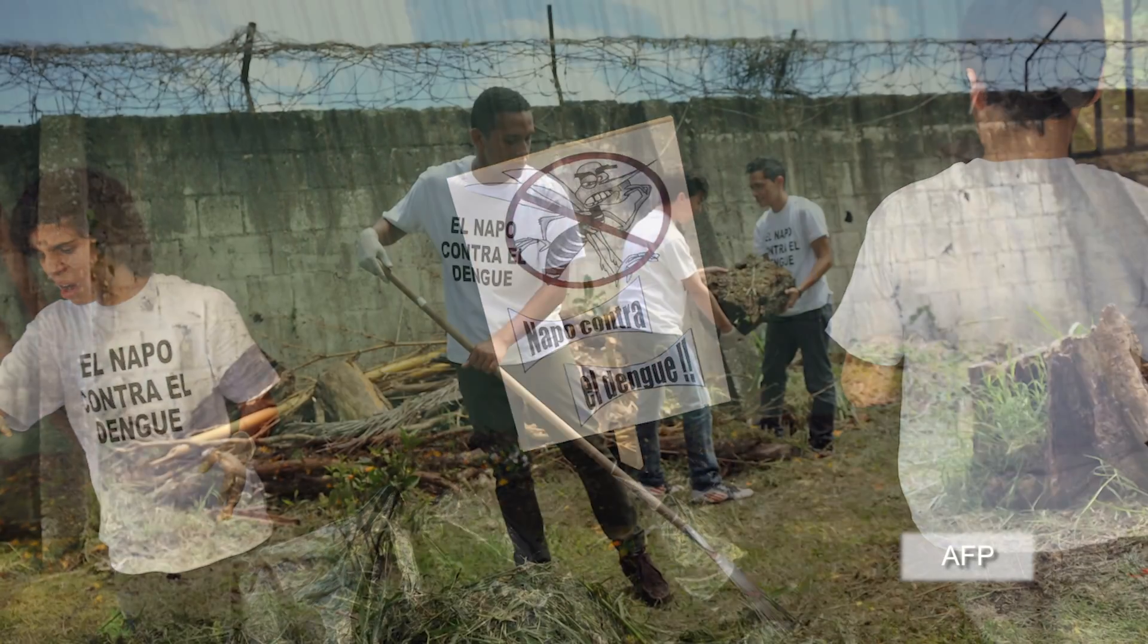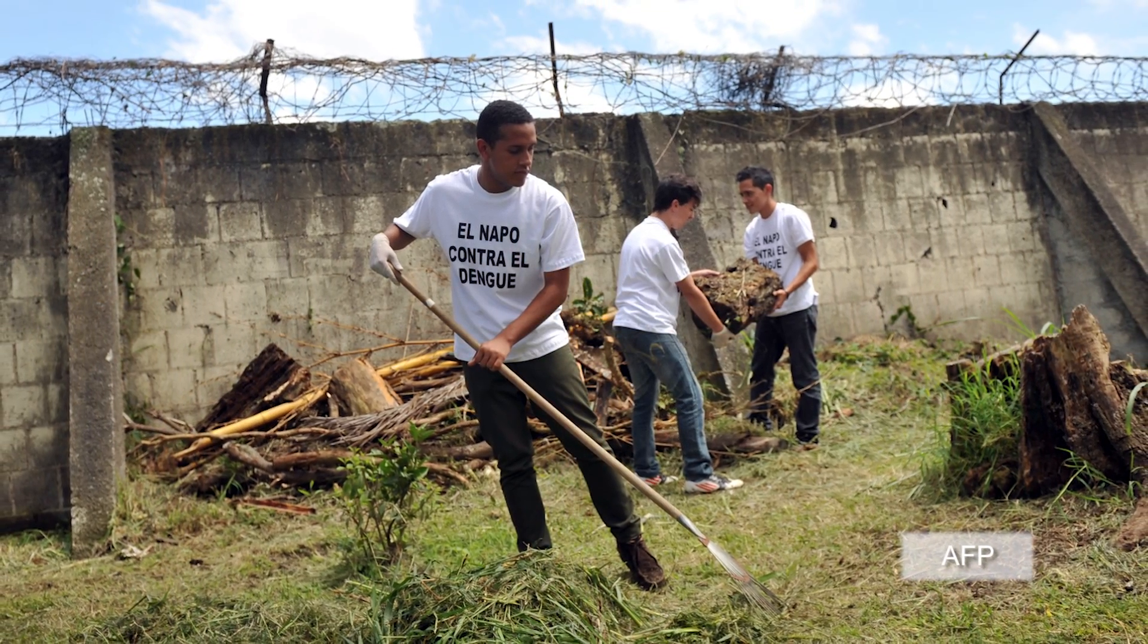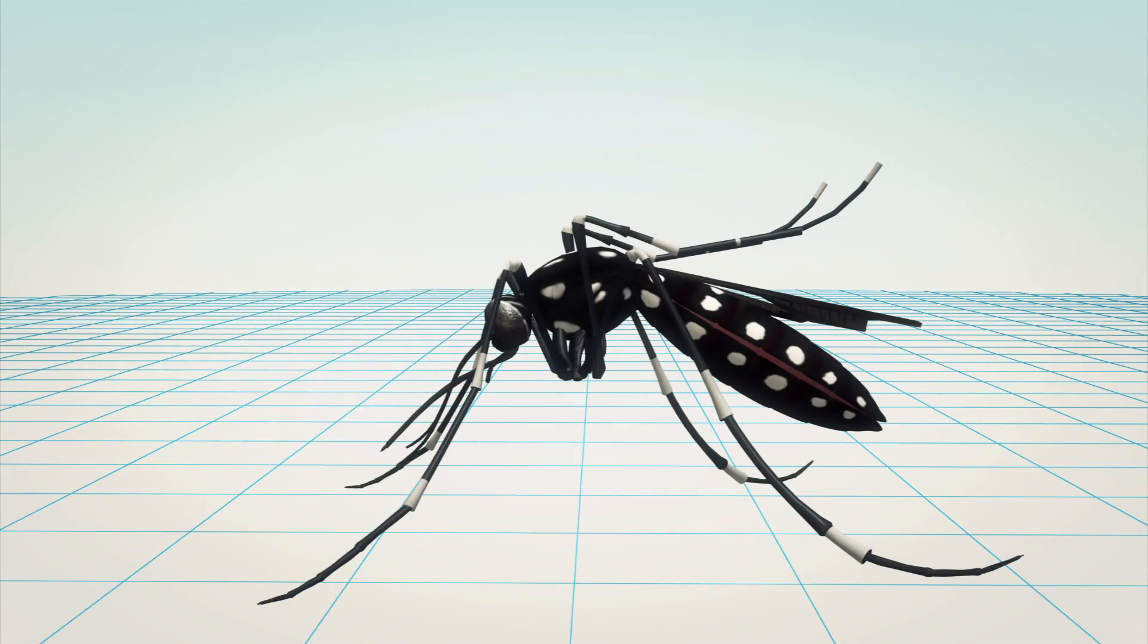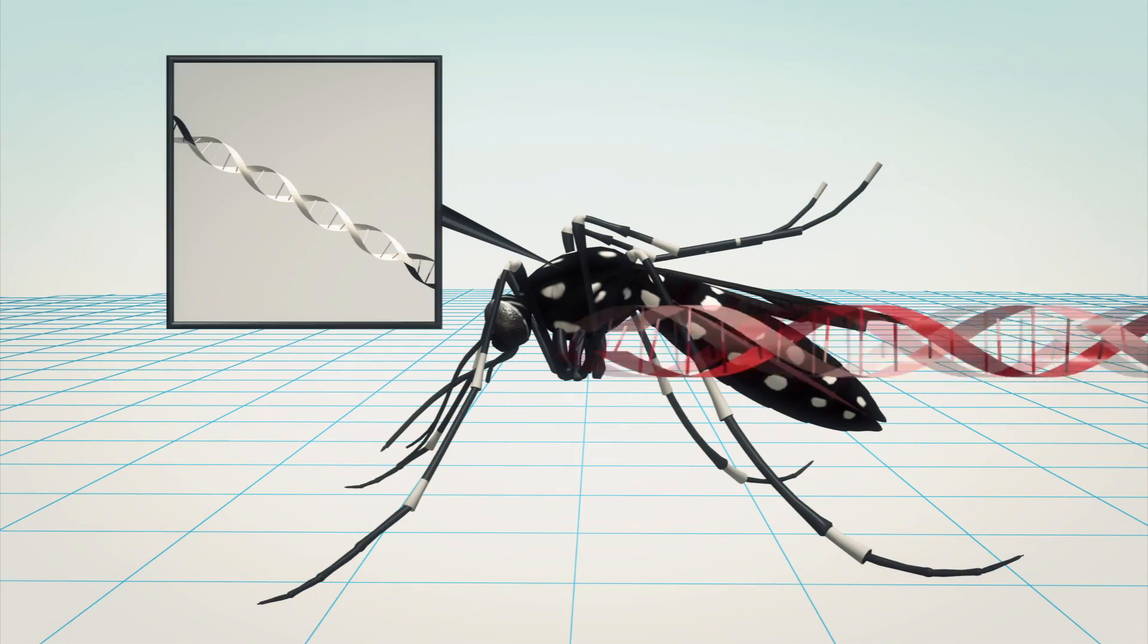Thousands of genetically modified mosquitoes will be released in Panama in an attempt to stop the spread of the dengue virus. The Aedes aegypti mosquito is a primary vector of dengue.